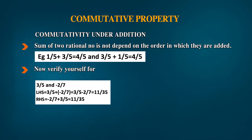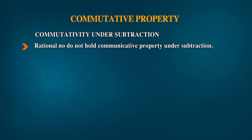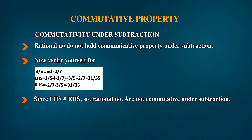Rational numbers do not hold commutativity under subtraction. Verify for 3/5 and -2/7: left-hand side (a - b) = 3/5 - (-2/7) = 3/5 + 2/7 = 31/35. Right-hand side (b - a) = -2/7 - 3/5 = -31/35. Since left-hand side and right-hand side are not equal, rational numbers are not commutative under subtraction.